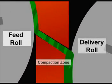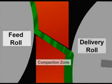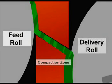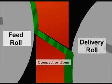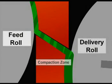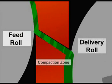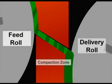The fabric moves between two heated shoes, which have special surfaces that grab the fabric in a controlled way. The gap between these shoes is set to achieve compaction. The delivery roll is made of rubber and turns at a slower surface speed than the feed roll, and along with the shoes, slows the fabric down to allow for compaction.